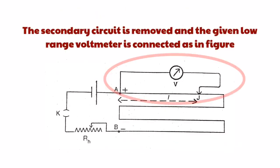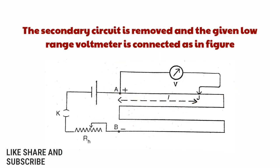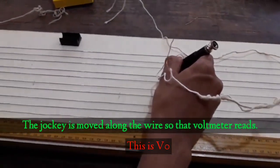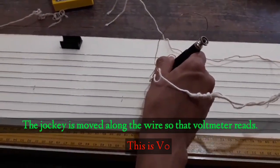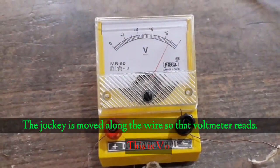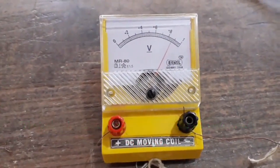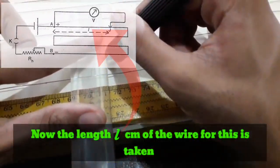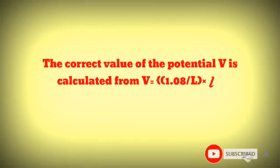The secondary circuit is removed and the given low-range voltmeter is connected as in figure. The jockey is moved along the wire so the voltmeter reads V zero. Now the length L centimeter of the wire for this is taken. The correct value of the potential V is calculated from V equals 1.08 per L into L.